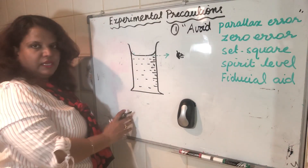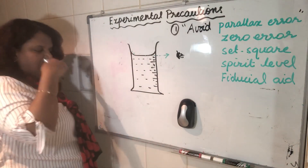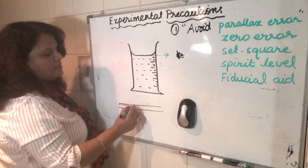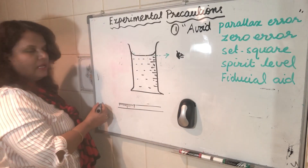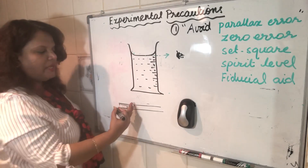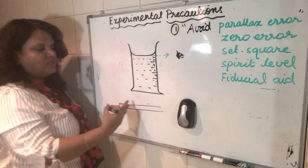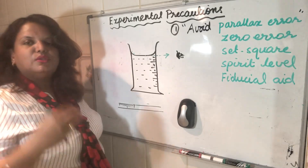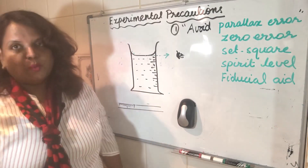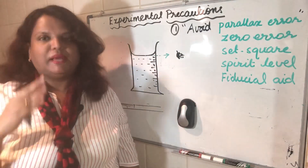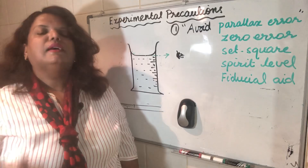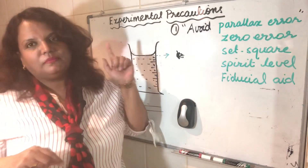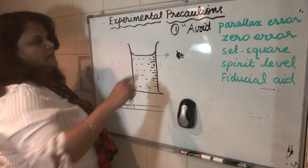Even with a meter rule lying flat on a surface, parallax error can occur. Your eye level should be vertically above it — not at an angle from the left or right. If the ruler is vertical, your eye level should be level with the reading you're taking. So in almost all experiments, if you write 'avoid parallax error,' that is a rule of thumb that earns you that mark.